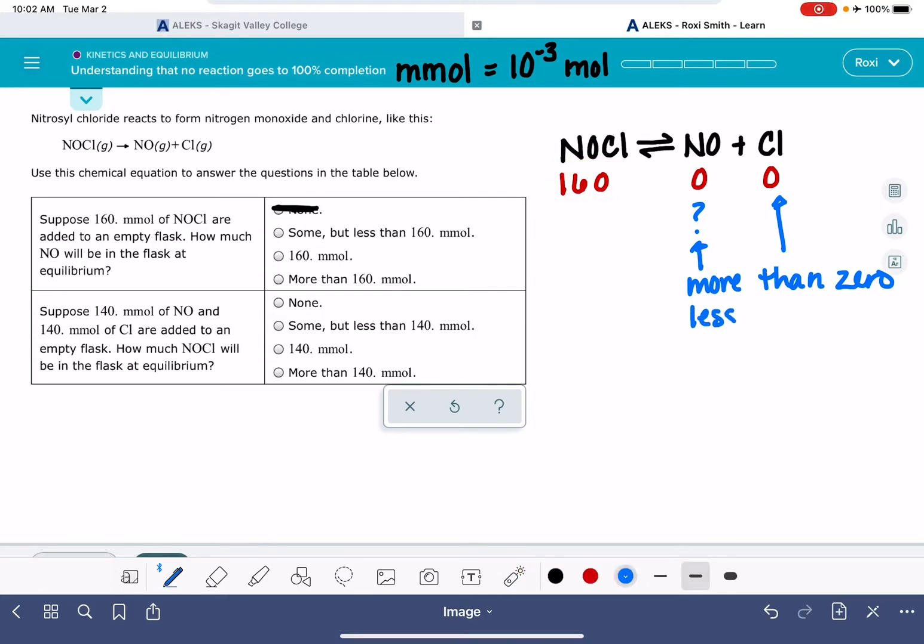So there's going to be less than 160 because this reaction is not going to go 100% to completion, meaning that we'll have some NOCL, just not the full 160. So it looks like the best choice here is some, but less than 160, not 160 millimoles. This would not be an appropriate answer because that would mean that this reaction just goes from left to right without any back reaction taking place. We know that that's not the case. More than 160 doesn't even make sense because these two substances react in a one-to-one ratio. So the maximum amount of this that we could make in any situation would be 160.